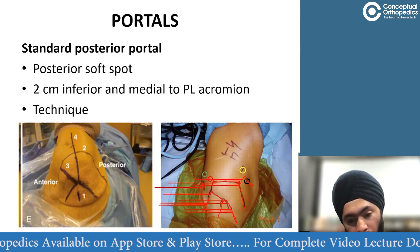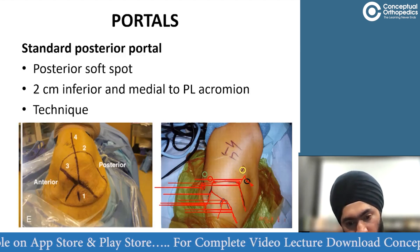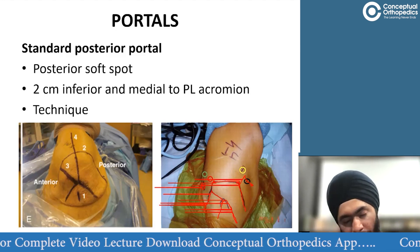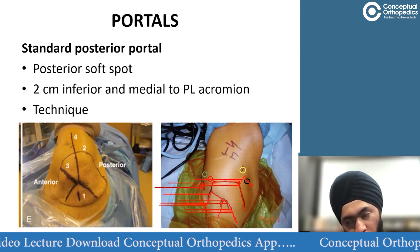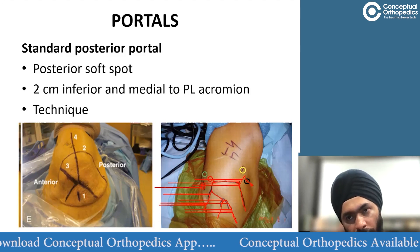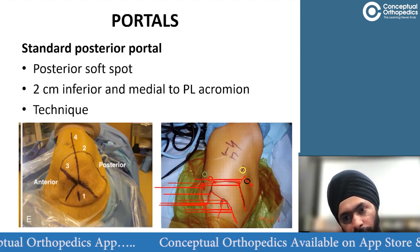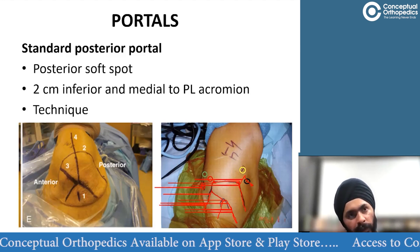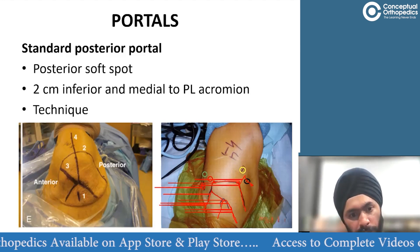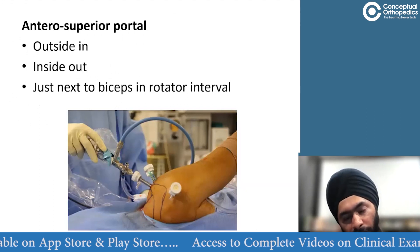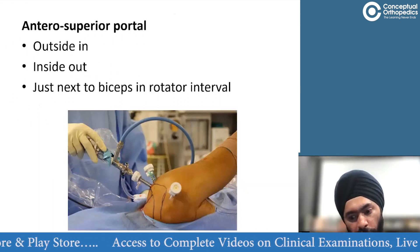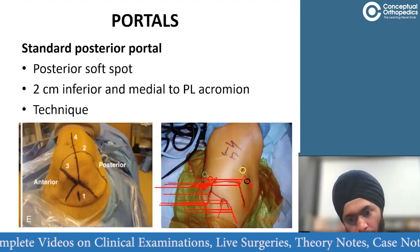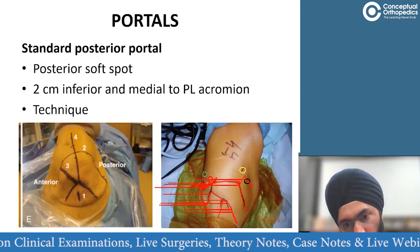To summarize: the posterior portal is two centimeters inferior and two centimeters medial to the posterolateral edge of the acromion. For the anterosuperior portal, first draw a line joining the coracoid to the anterolateral edge of the acromion — the anterosuperior portal is just lateral to the midpoint of this line, and the anteroinferior portal is just lateral to the coracoid.